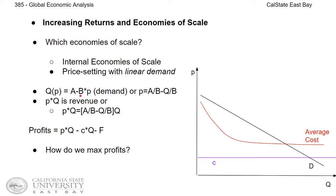For example, if B is equal to 1, then for every dollar increase in price, you lose 1 student. So if you set price P to 0, demand is 100. If you set price P equal to 1, you lose 1 student, so demand is 99, and so on. Sometimes demand is more sensitive to price — if B equals 2, then for every dollar increase in ice cream price, you lose 2 students. So if price equals 1, demand is only 98. That is an example of a linear demand function.